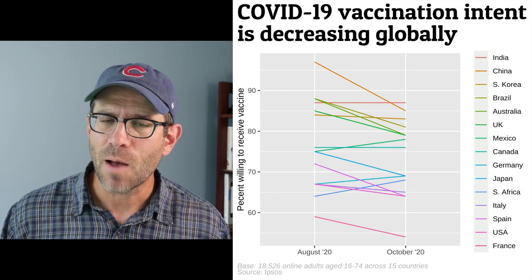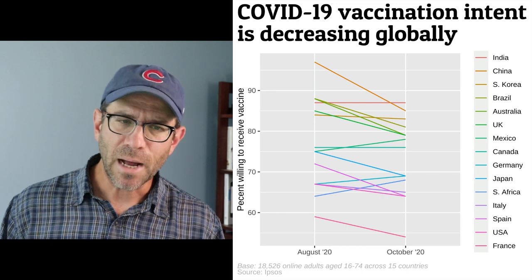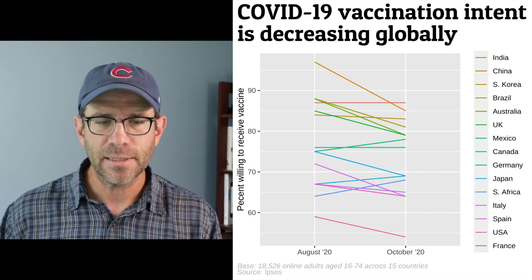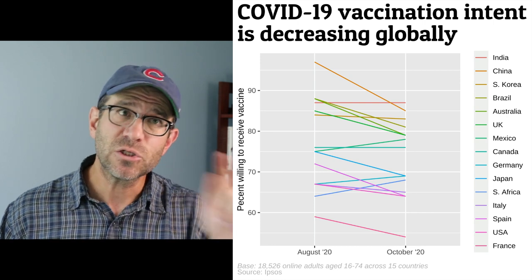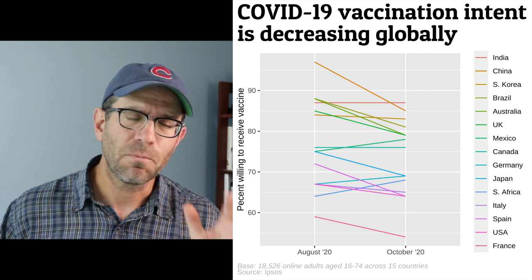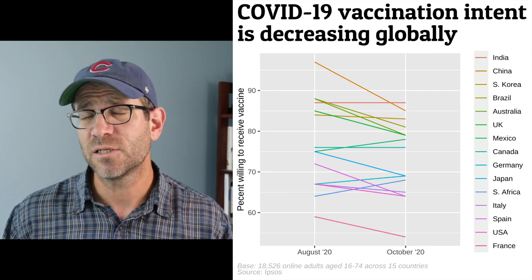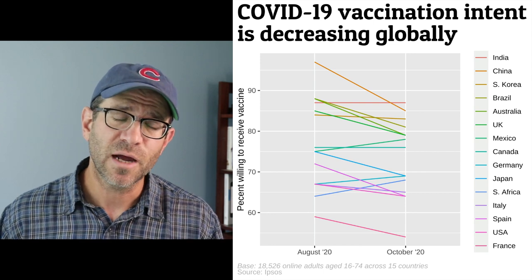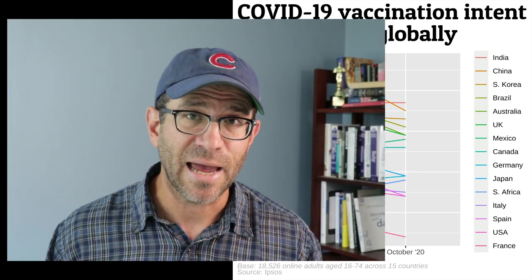I don't think this is going to totally solve our problem of having 15 colors for 15 countries, but if we could put the countries in order of either the August data or the October data, it might be easier to visually connect the country name with the color. It's a great opportunity to show you how we can modify the order of the country as well as the order of the month on the x-axis.